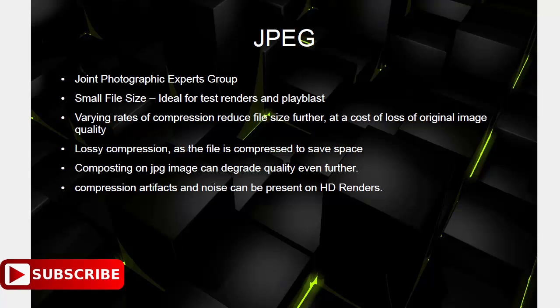JPEG uses very lossy compression, which helps keep the file size small. However, doing compositing on a JPEG image will degrade the quality further — artifacts and noise in the image will increase when you apply levels or color correction in compositing software. You won't get much color information because the image is already compressed. The upside is it's a very light file format that won't take much space on your disk.